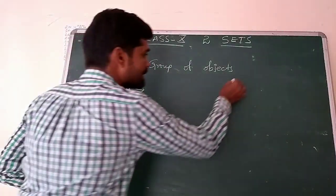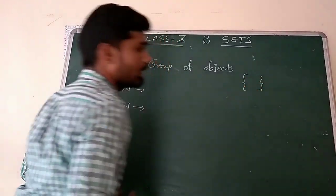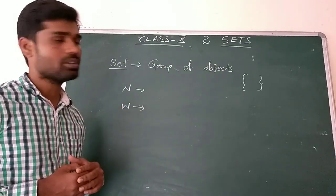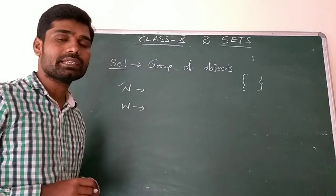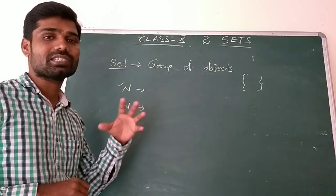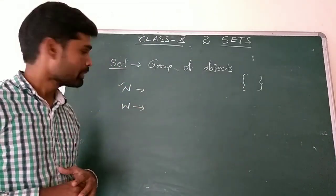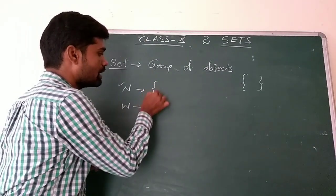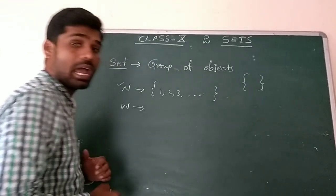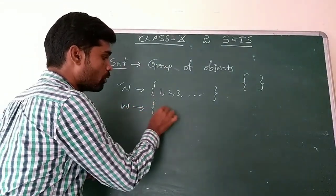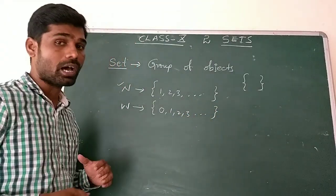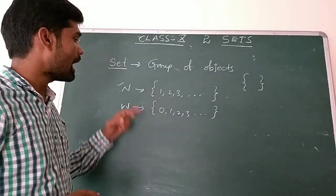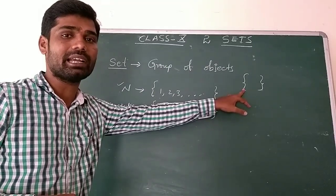The set symbol can be written and read as 'set of.' For example, N is a set of natural numbers — it consists of all numbers like 1, 2, 3, 4, and so on. And W is a collection of whole numbers, starting from 0, 1, 2, 3, and so on. So a set is a group or collection of some objects, and it can be read as 'set of.'